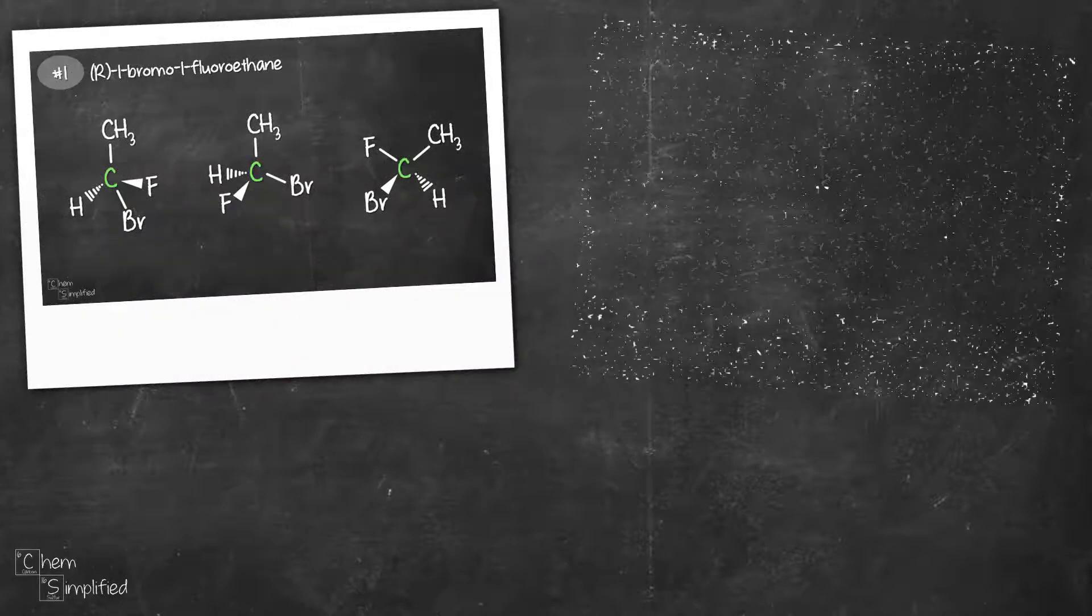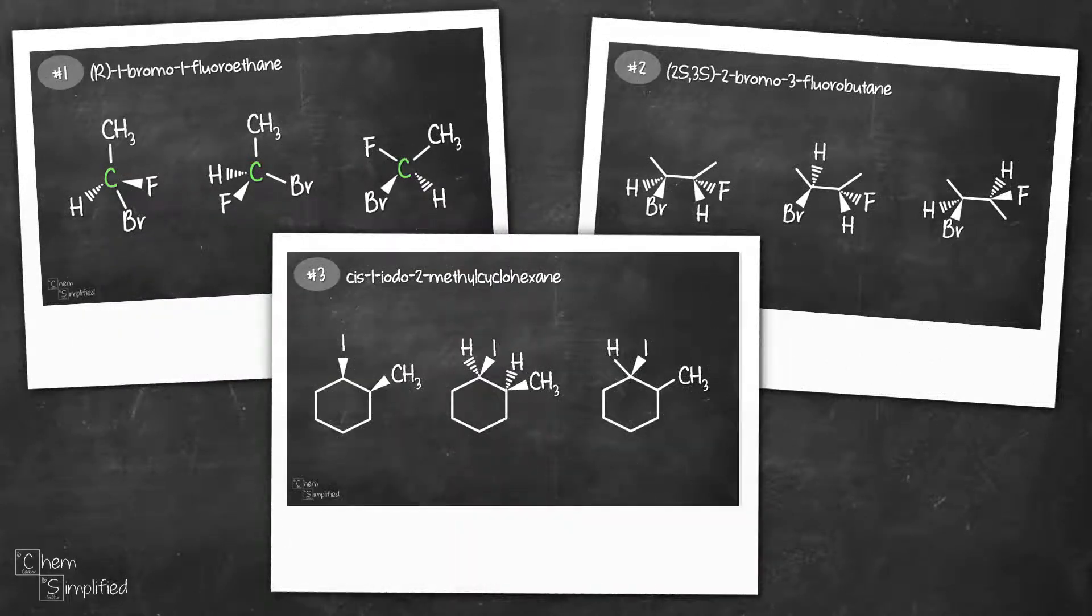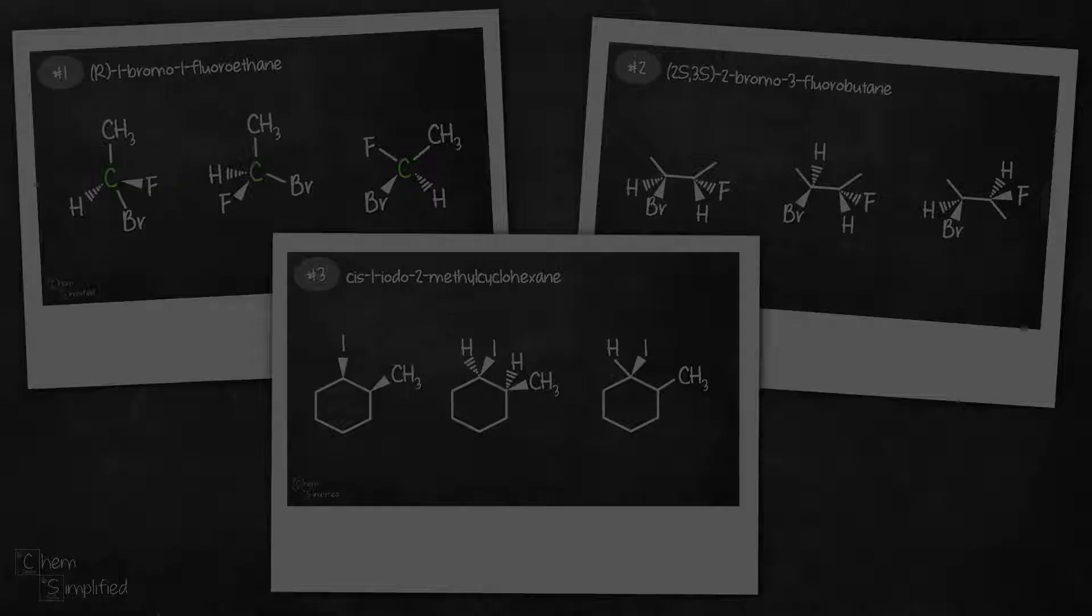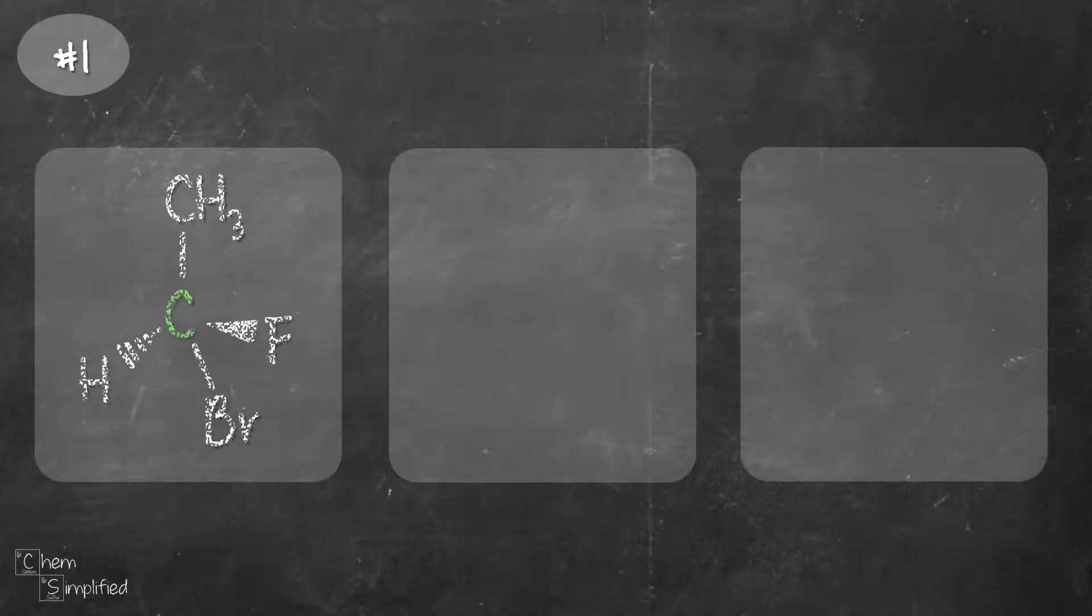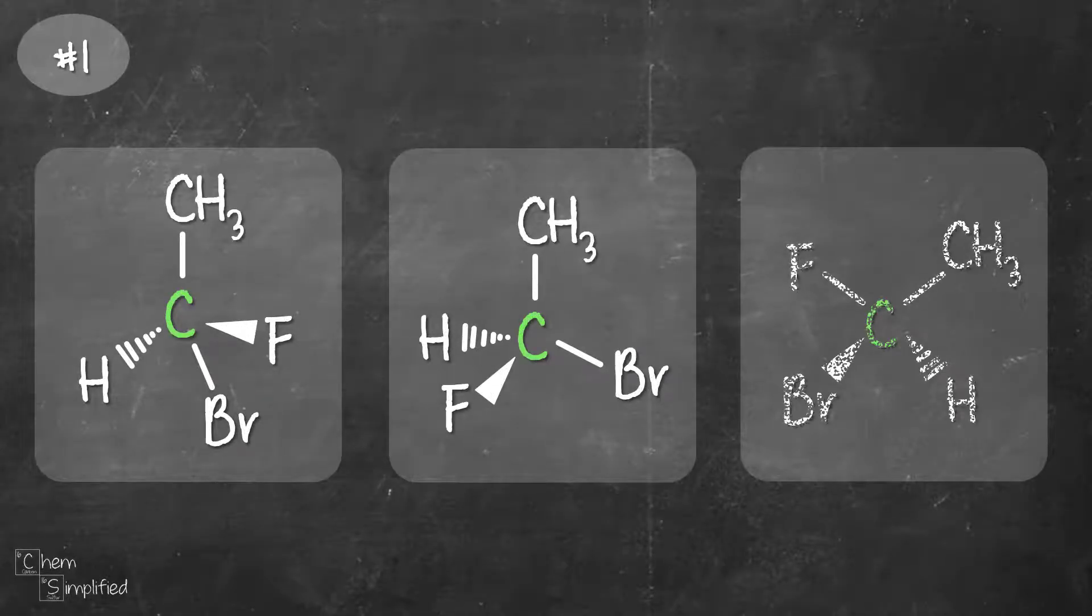In this video, we're going to look at common mistakes when drawing organic compounds with tetrahedral center. We'll be looking at three different examples and figure out if each of the structure drawn is correct or not. Let's start with this first one. It's 1-bromo-1-fluoroethane. Look at each of them and then figure out which one is drawn incorrectly.